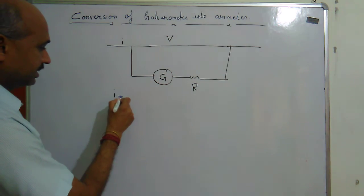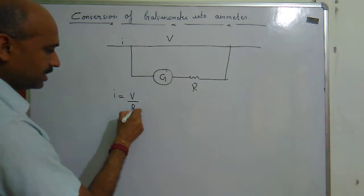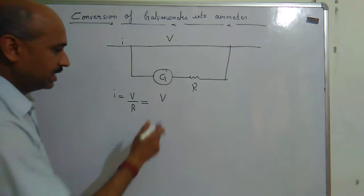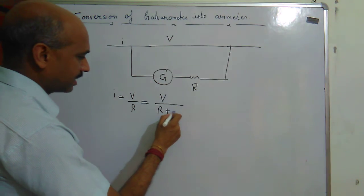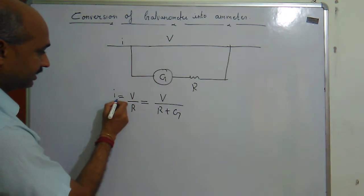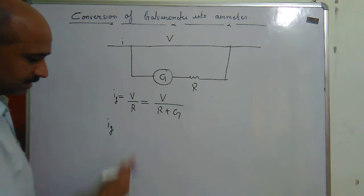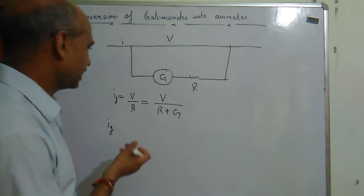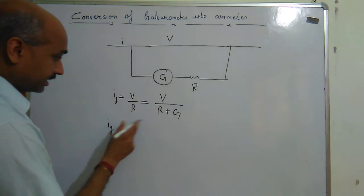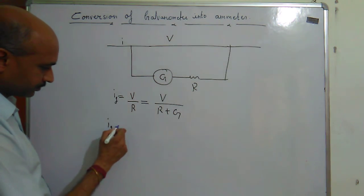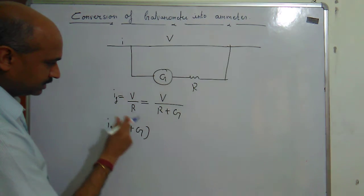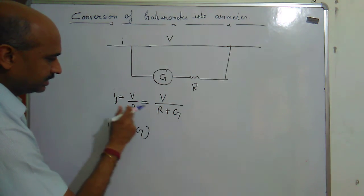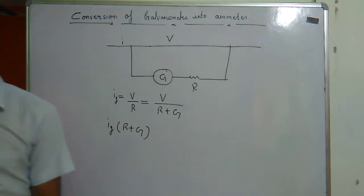The current flowing here is Ig, so Ig equals V upon (R + G). The voltmeter measures voltage, so I need to find the value of V. From this expression, V equals Ig × (R + G). This is the value of the voltage V which can be calculated using this equation.